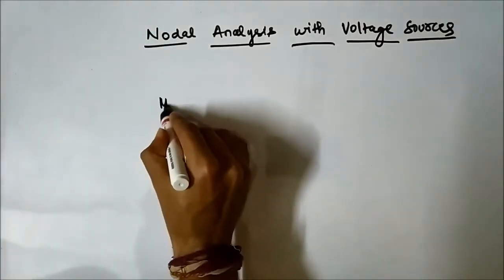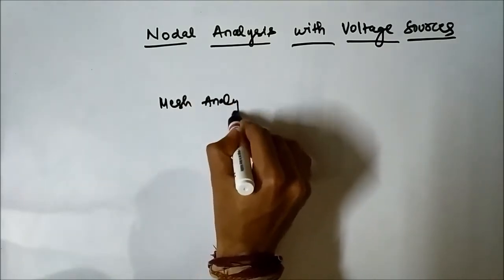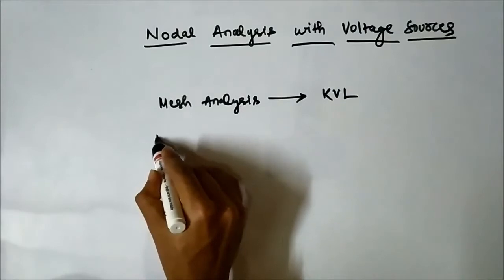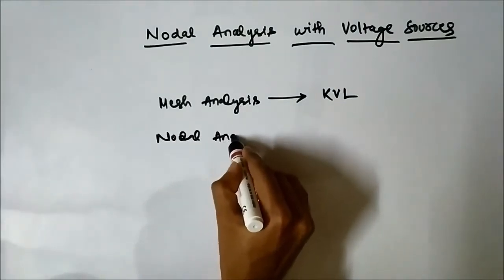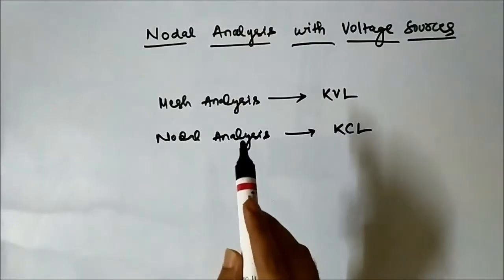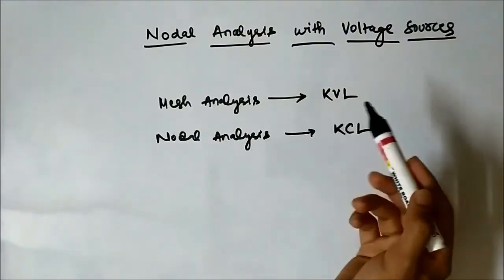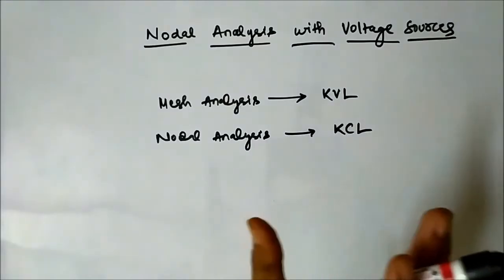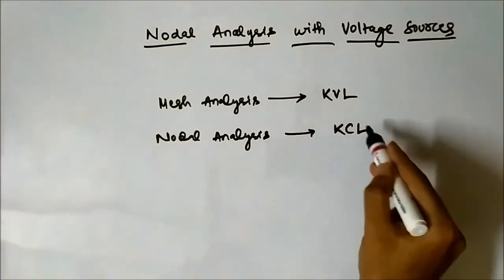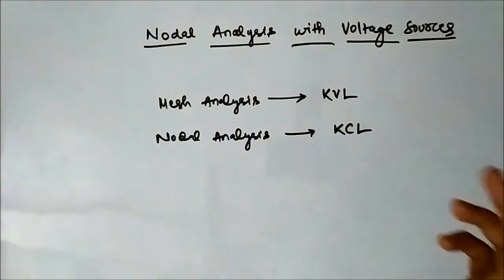We all know that mesh analysis is based on Kirchhoff's voltage law, and nodal analysis is based on Kirchhoff's current law. So in mesh analysis, if there is an independent or dependent voltage source present, it makes no difference — no special attention is needed because it is based on KVL. Similarly, in nodal analysis, if there is an independent or dependent current source present in the circuit, it needs no special attention because it is based on Kirchhoff's current law.